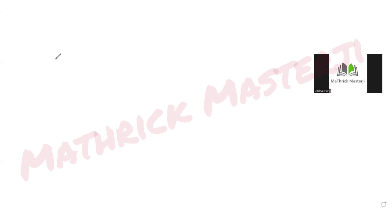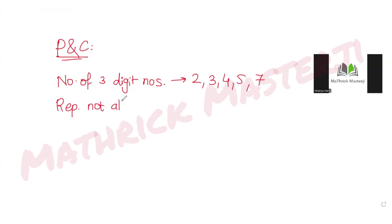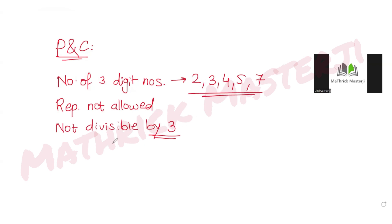Hi guys, I hope you are all doing well. Let's see today's question. Today's question is from the topic of permutations and combinations. The question tells us to find the number of three-digit numbers which are formed using the digits 2, 3, 4, 5, and 7, with the condition that repetition is not allowed and the three-digit numbers formed should not be divisible by three. We need to find how many such three-digit numbers we can form.